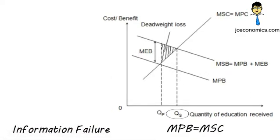In the case of information failure with education, consumers undervalue the benefit of education. Thus, they consume at QP where MPB equals MSC.